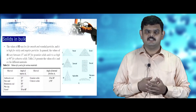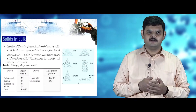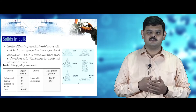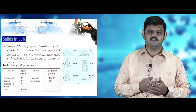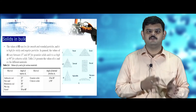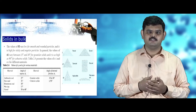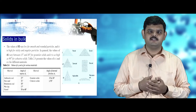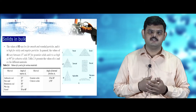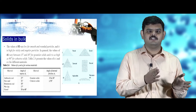The angle of repose is lesser because the outer surface particles are loosely packed compared to the inner particles. It is lesser for rounded particles and higher for coarse and angular particles. It ranges between 15 to 30 degrees for granular particles and takes a value of 90 degrees for cohesive solids.